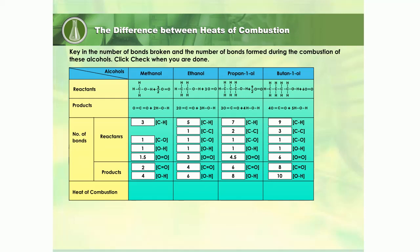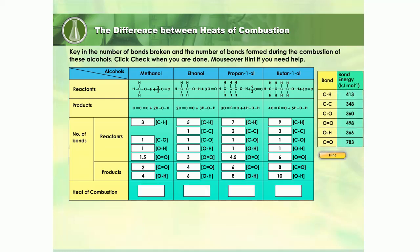The number of bonds broken and formed increases going down the series. Now, calculate the heat of combustion of the alcohols based on the data and the given bond energies.